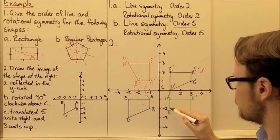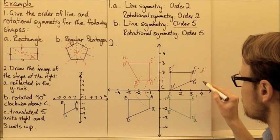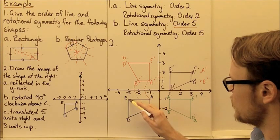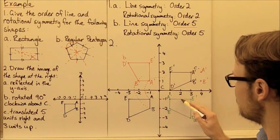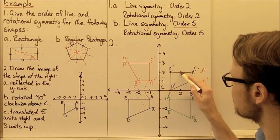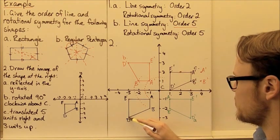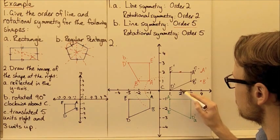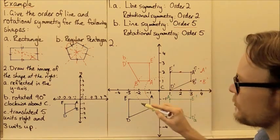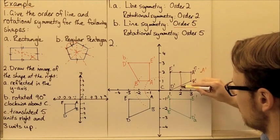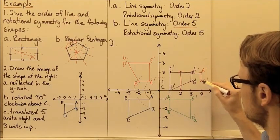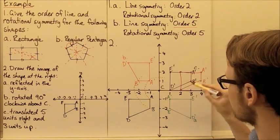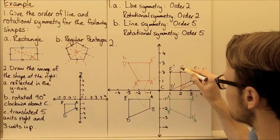For B, five units right and three units up — B dash should be here. For E dash, five right and three up — E dash should be here. For D dash, five right and three up. The purple shape was only shifted four units to the right and three units up, so this corrected position is the correct location. So D dash should be here and E dash should be here.